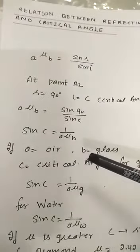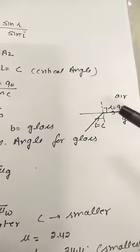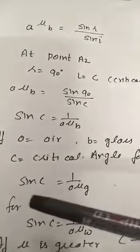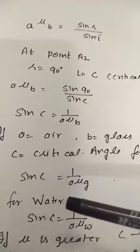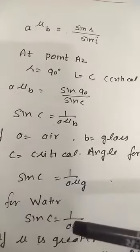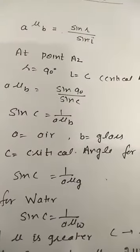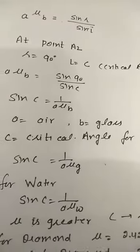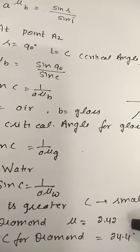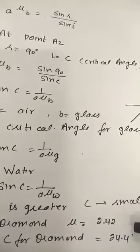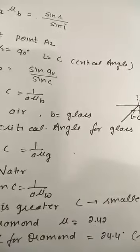If A is air and B is glass, for example, if the ray is going from glass to air, then we can write sin c equal to 1 upon A mu g. This is the critical angle for glass. Similarly, critical angle for water is sin c equal to 1 upon A mu w. So the greater the mu for any medium, means the denser the medium, the smaller the critical angle. For example, diamond. For diamond, refractive index is 2.42, so the critical angle for diamond is very very small and that is just 24.4 degrees.